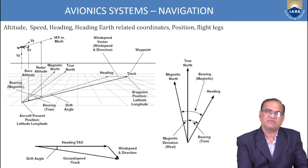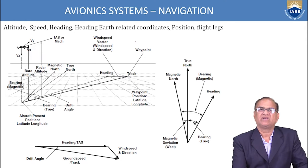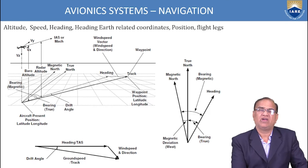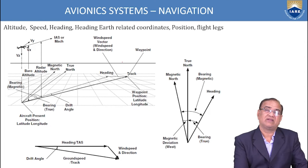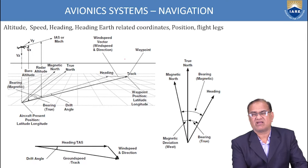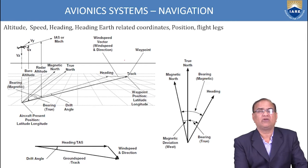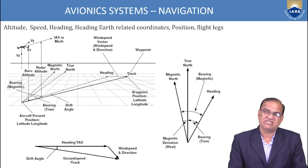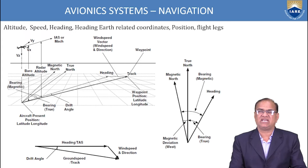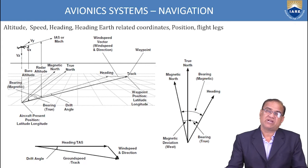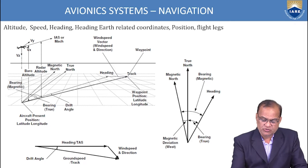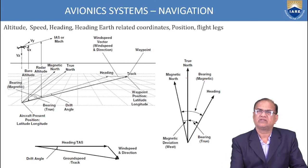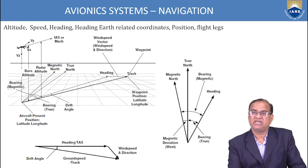The system can also measure indicated airspeed or the Mach number of the aircraft, magnetic north, true north, and wind speed vectors. I will be explaining all these things in detail in unit number three, which will cover the principle of each and every equipment. Here I am just giving you an introduction — all these items are present in the aircraft.